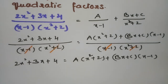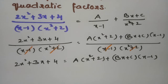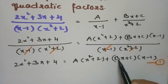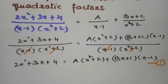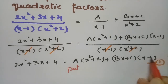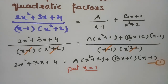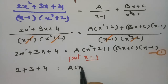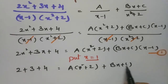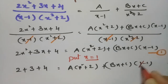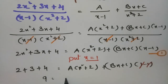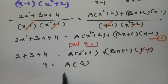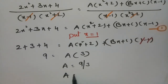After cancelling common factors on both sides, our equation becomes: 2x² + 3x + 4 = A(x² + 2) + (Bx + C)(x − 1). Consider this as equation 1. To find A, we substitute x = 1 to make the second term zero. Then: 2(1) + 3(1) + 4 = A(1 + 2), so 9 = 3A, giving A = 3.